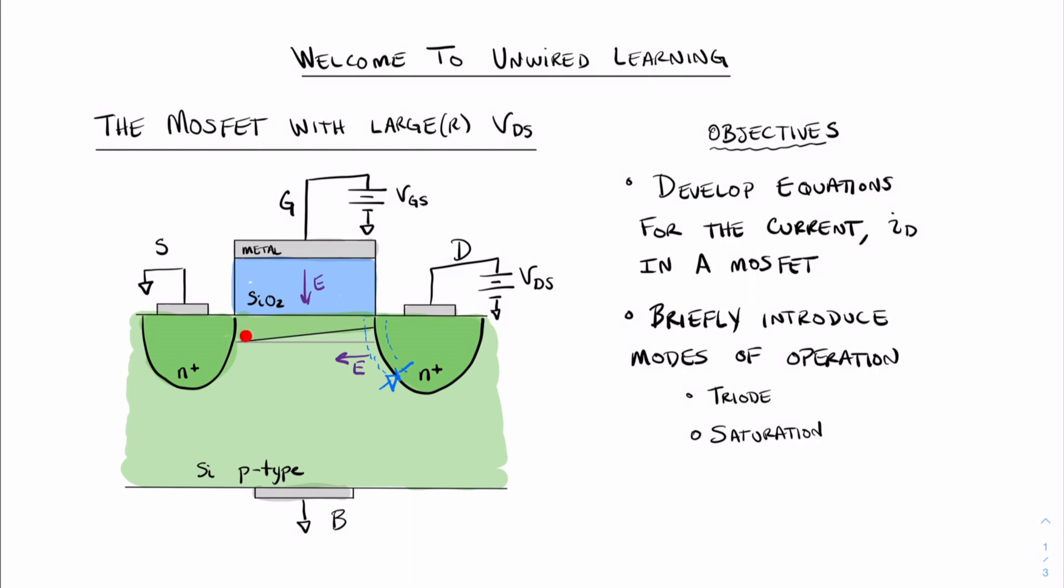The line that is depicted in gray here was the original line that we had when we had a small value of VDS, and we approximated the channel shape as if it were rectangular. Now we can see that when we have a larger value of VDS, the channel shape is in fact not rectangular, rather it is more trapezoidal in shape.